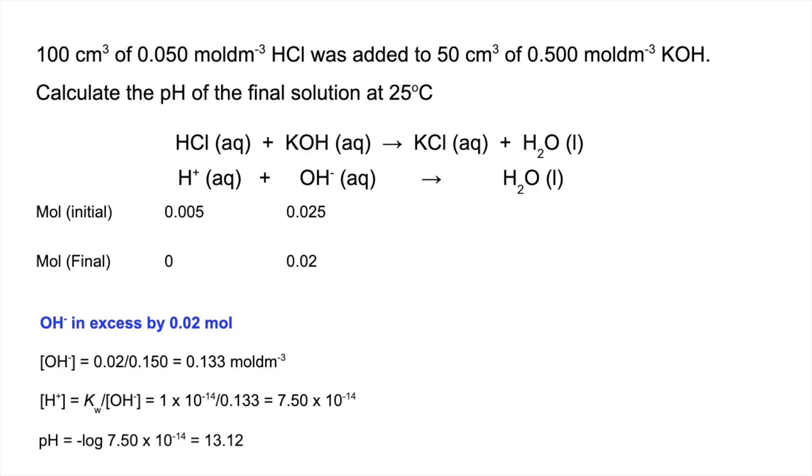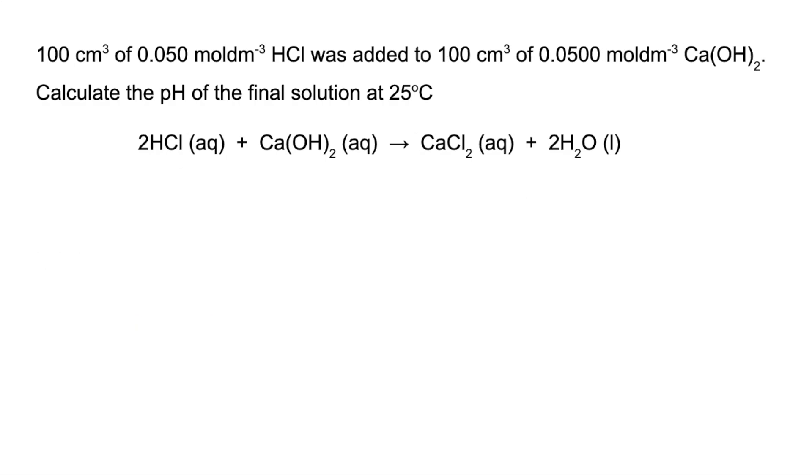So here's the final one. Again, pause the video and then play on when you're ready for the answer. So you can see now we've got a different mole ratio in the equation - it's not one to one anymore, it's two to one. But basically the ionic equation is still the same as before, because we'd have two H+ ions, two OH- ions making two waters, and obviously those twos will cancel to what we've had in the previous two equations.